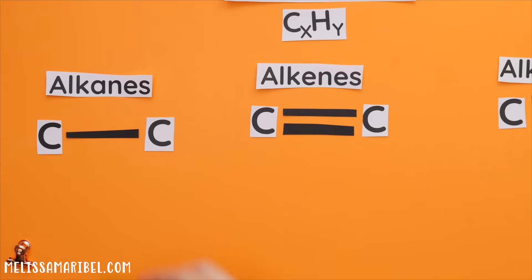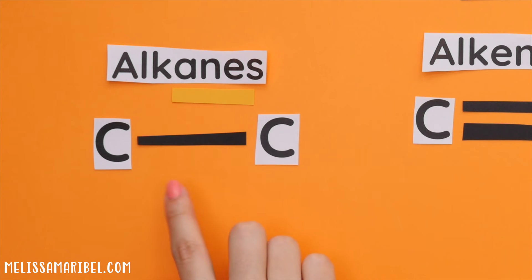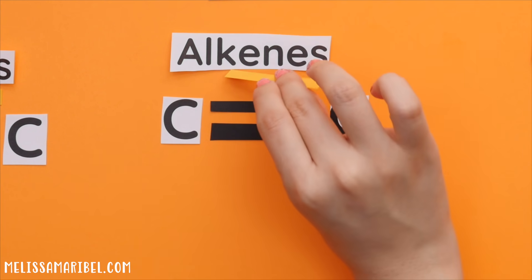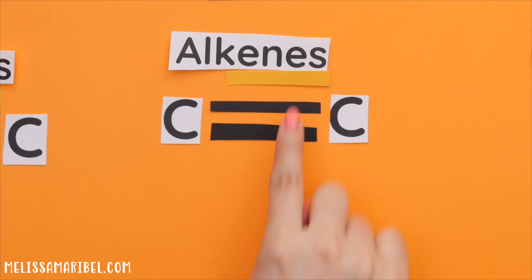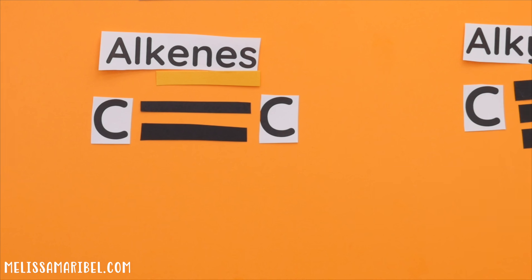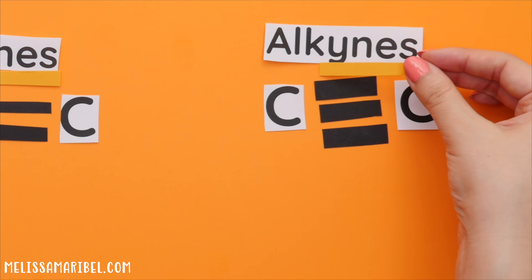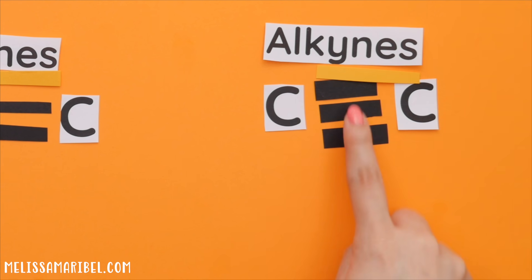If something ends in -ane, it's an alkane, meaning it only has single bonds. The ending -ene means it's an alkene, which has a double bond. And the ending of -yne makes it an alkyne, which means it's a triple bond.